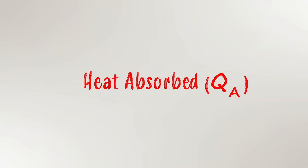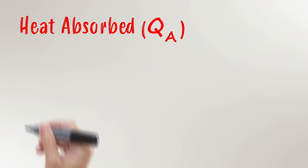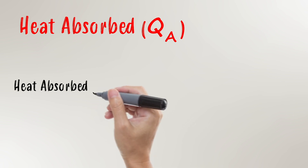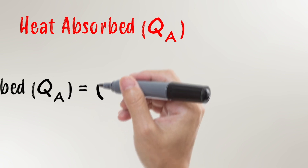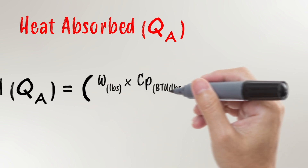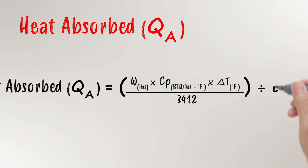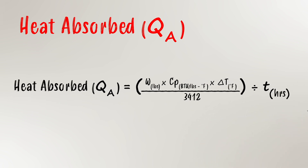The first part of the equation is QA, which is the heat energy absorbed by the materials. Here's the formula: QA equals mass times the specific heat, or Cp, times the delta T — divide that by 3412, which in turn is divided by time. This equation allows us to determine the total kilowatts required for any application.